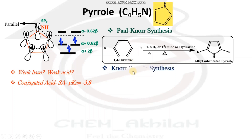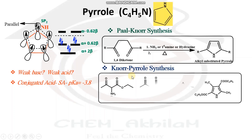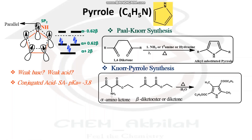The next method is Knorr pyrrole synthesis. In Knorr pyrrole synthesis, an alpha-amino ketone and a beta-keto ester or diketone condense to form pyrrole. Mechanism is not included in this section.